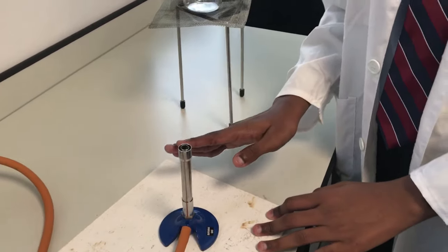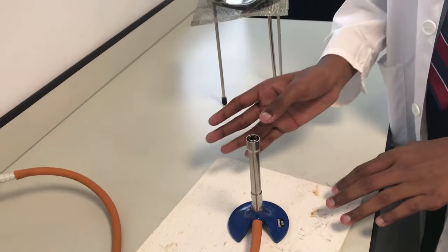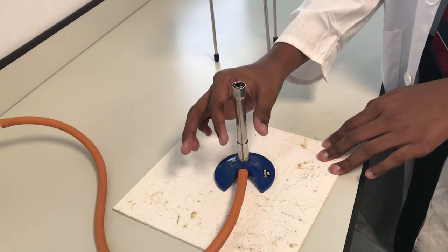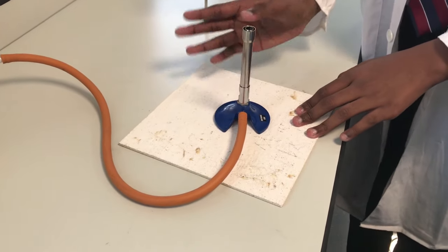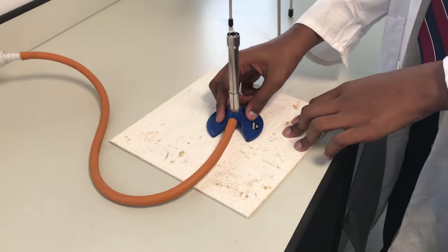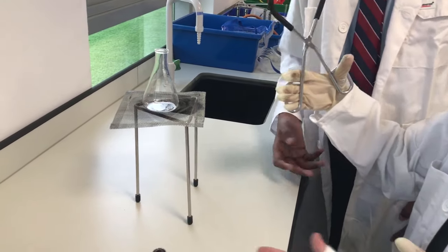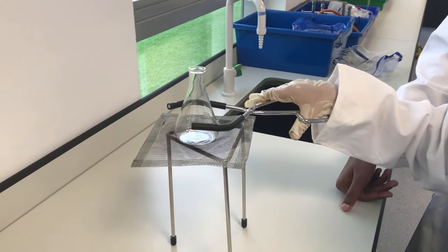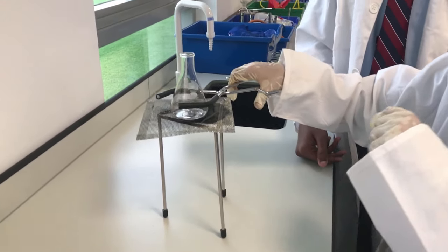So if the Bunsen burner is ever to fall, which shouldn't happen, then it will just put the fire out. But still make sure that you don't hold it on top here, either from the blue side or the collar, because the collar will only get warm, not extremely hot. Oh yeah, and one more thing, guys, never take a conical flask without tongs, uh, whatever.